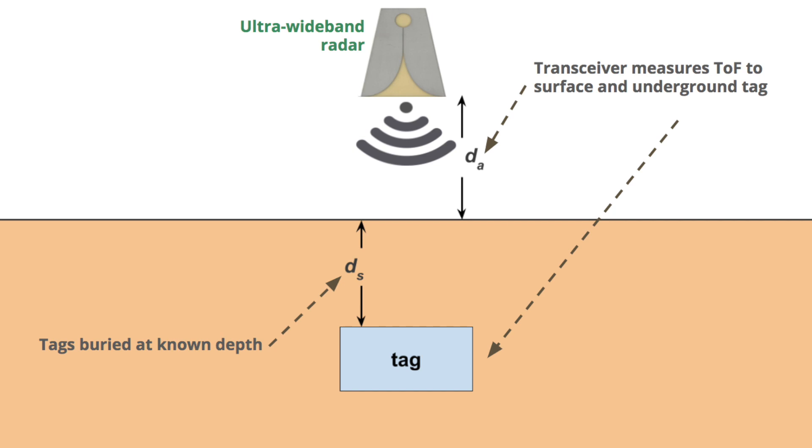Our reader uses ultra-wideband radar to measure time of flight. The backscatter tag acts as a fixed underground reference point. Since we know the depth of the tag, we can use simple algebra to figure out how fast RF travels through the soil.